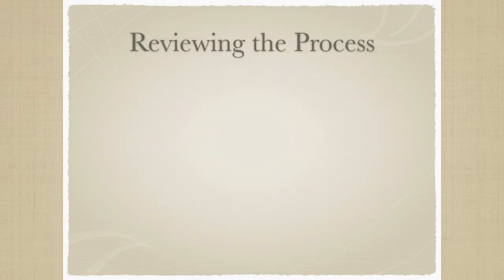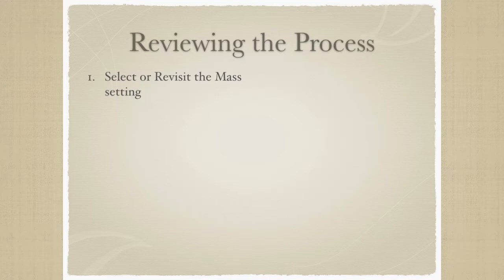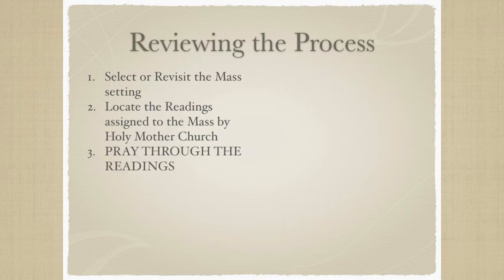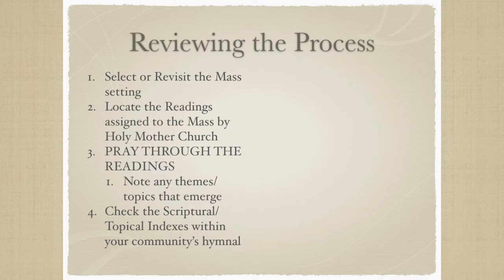Before concluding, let's review our four-step process. First, we select or revisit a Mass setting that will help our congregation and community be successful in singing the acclamations proper to them. Next, we locate the readings assigned for the Mass we are planning through an online lectionary source such as usccb.org or through our church's lectionary. Third, we pray through the readings ourselves and see what themes emerge as we encounter God in sacred scripture. And finally, we take what was heard in prayer to a scriptural and topical index of a hymnal to plan for our Mass.